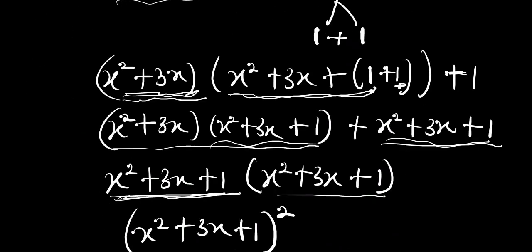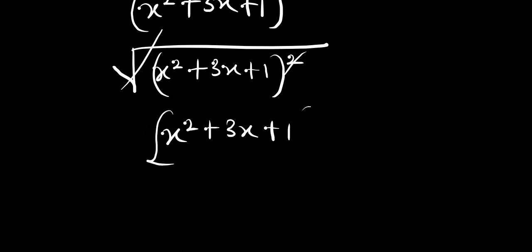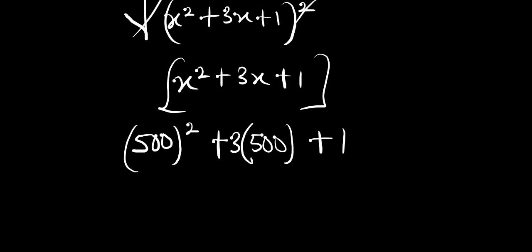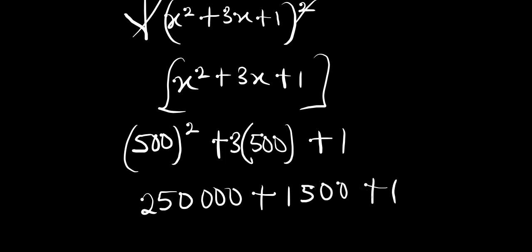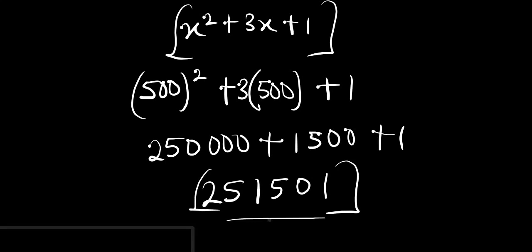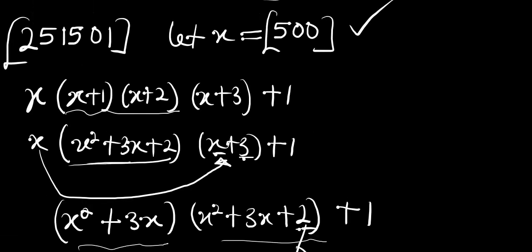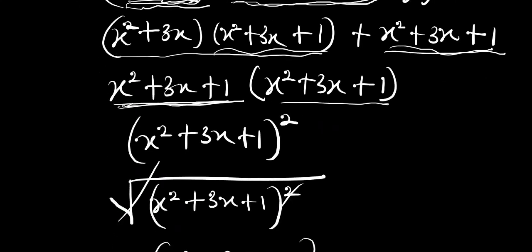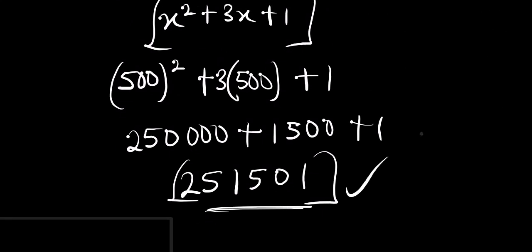Recall that x equals 500, so we substitute: 500 squared plus 3 times 500 plus 1 equals 250,000 plus 1,500 plus 1, which gives us 251,501. This is the correct answer, matching what I mentioned at the start. That's it for the video — I believe you've gotten some tricks on how to deal with problems like this. Please subscribe to my channel and drop a comment. Thank you and goodbye.